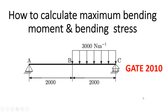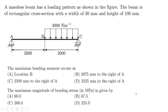In this video we will try to understand how to calculate maximum bending moment and bending stress. This question is taken from the GATE 2010 question paper. A massless beam has a loading pattern as shown in the figure. The beam is of rectangular cross section with a width of 30 mm and height of 100 mm. We have to find out the location of maximum bending moment and the maximum magnitude of bending stress.